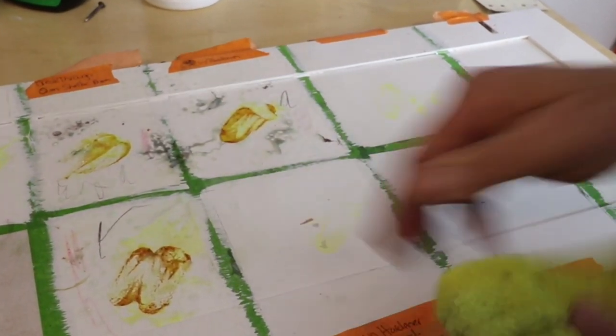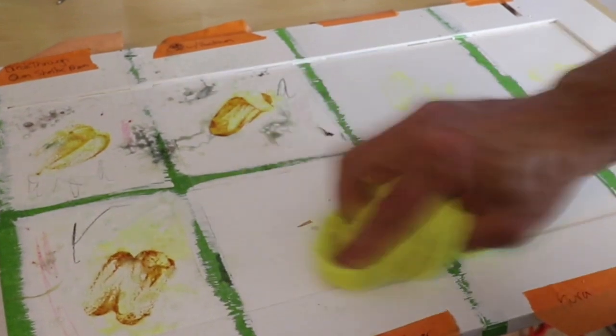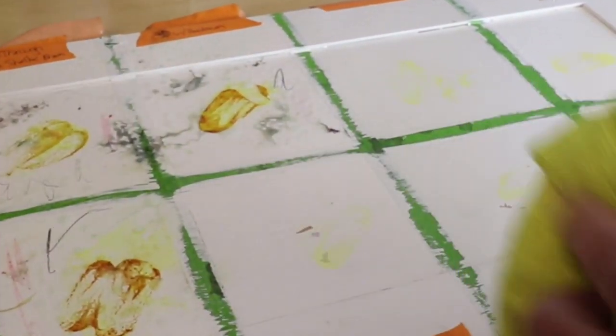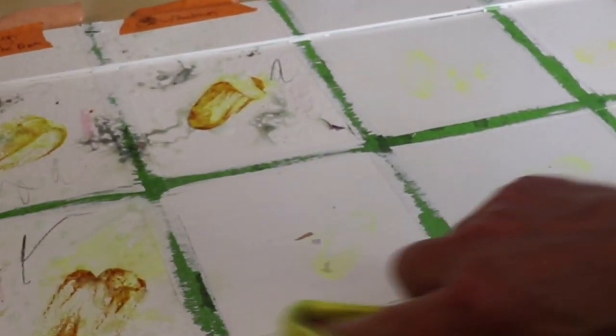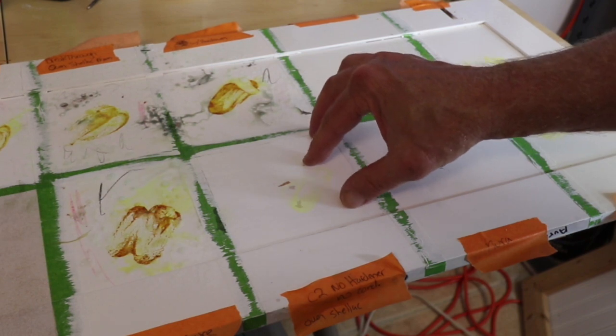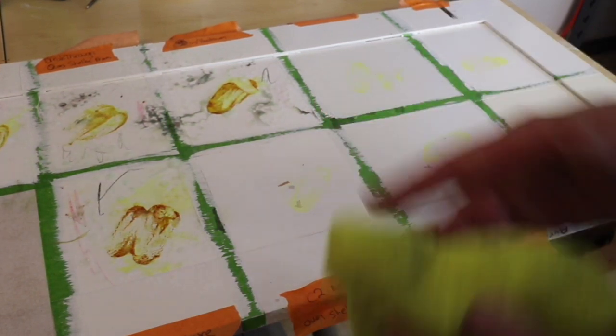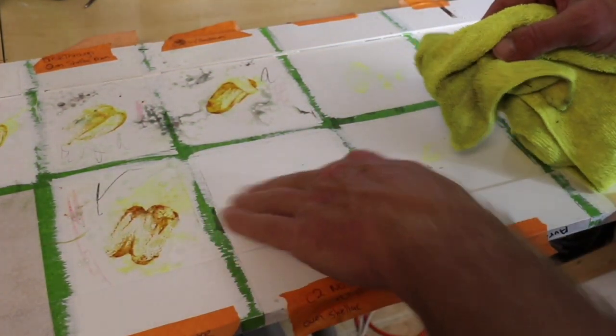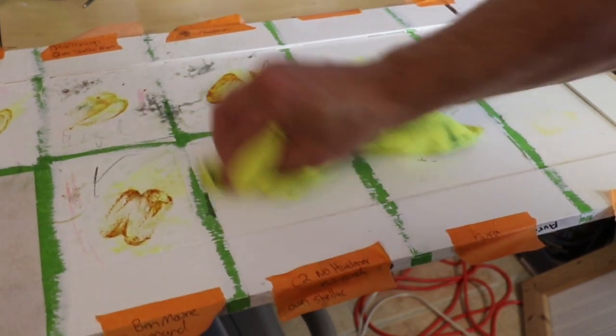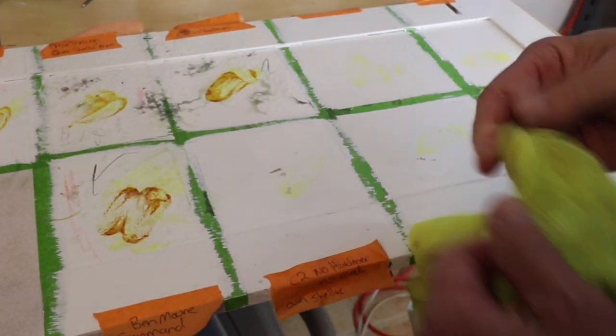This is the C2 with no hardener. You might not have ever heard of C2, it's kind of a boutique paint. Oh, that's soft. This is soft with the cleaners on there, it softens it up. Nobody has any paint coming off yet, I think.